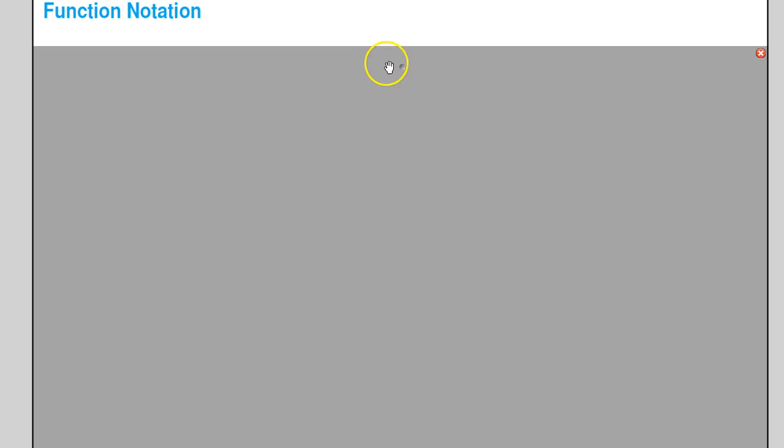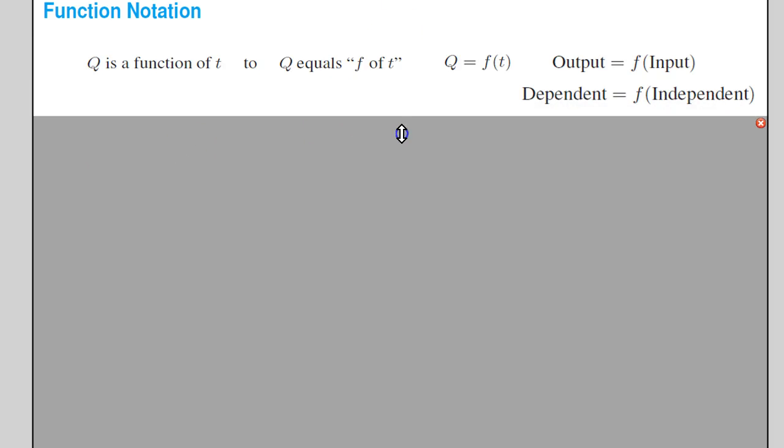We are going to use function notation frequently, and so I want you to be familiar with what it is and what it means. If I say that q is a function of t, which means that q depends on what t does, I can represent that as q is equal to f of t, which is what this verbal statement is saying.